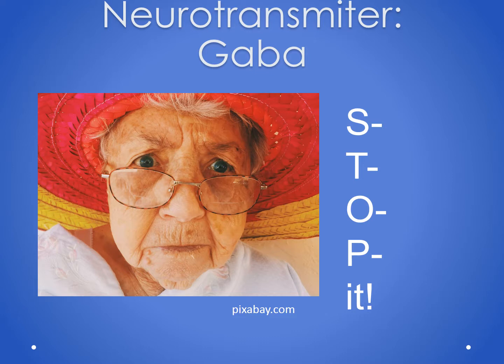The T is for tremors. When GABA goes up, the neurotransmitter dopamine goes down, and that has to do with coordinated movement. So watch for tremors.